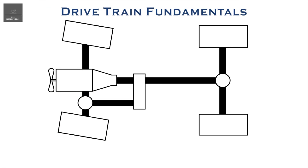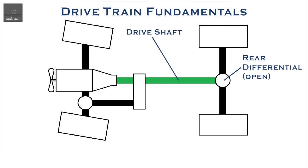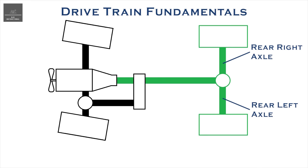Let's start with the fundamentals. A vehicle's engine produces torque — that is rotational force. This is coupled to a transmission, either manual or automatic. The transmission's role is to alter the speed and torque, and send it to the differential via a drive shaft. The differential, or diff, then transmits this torque to the wheels via the axles, one on each side of the differential.